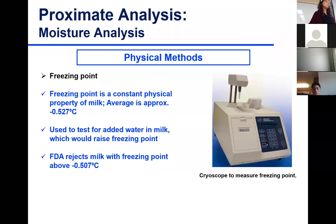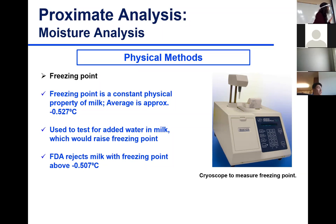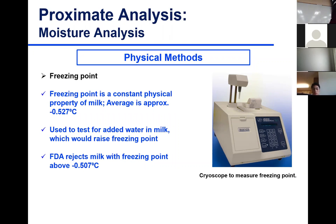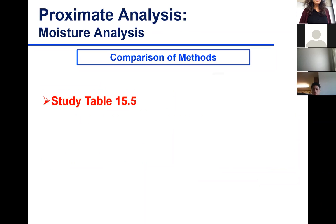Freezing point is also mostly used as a quick measure to determine adulteration in milk. Milk has a freezing point of approximately −0.527°C. If water is added to milk, the freezing point will be higher. FDA rejects milk with a freezing point above −0.527°C — anything above that indicates water has been added.